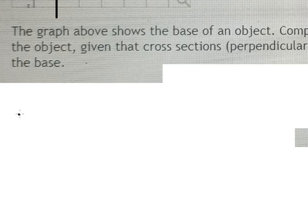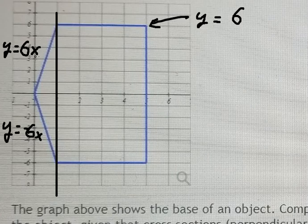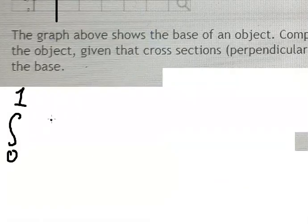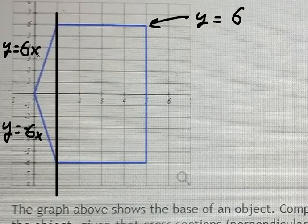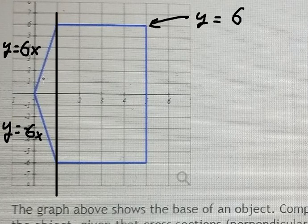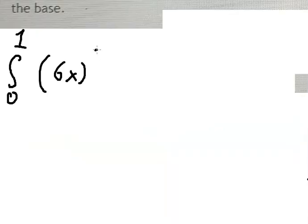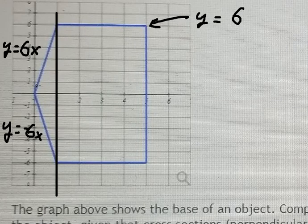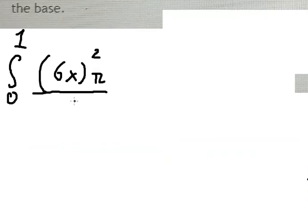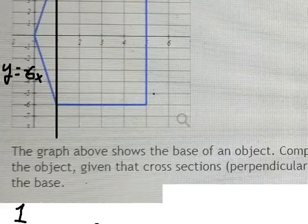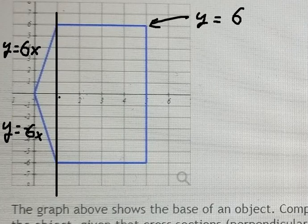So from zero to number one, we have 6x. So we have 6x in here. Because this point here is like the radius of the semi-circle, so we need to put the square, and we put pi in here. This is a semi-circle, we need to divide by two, and we have dx.